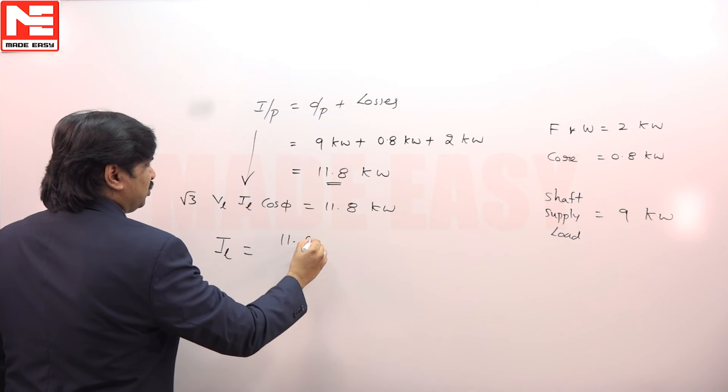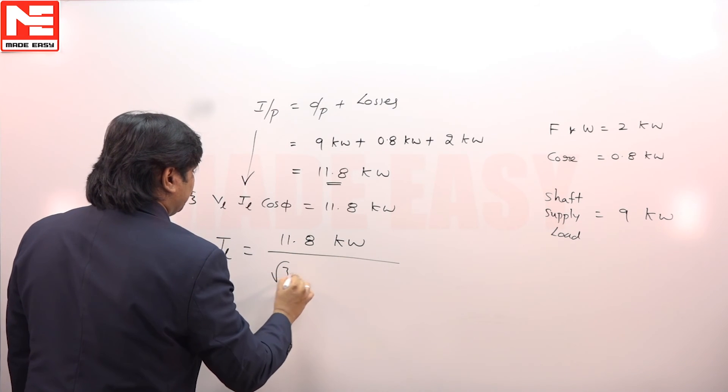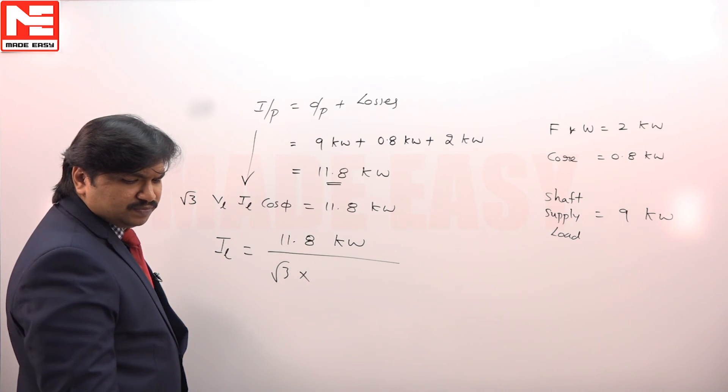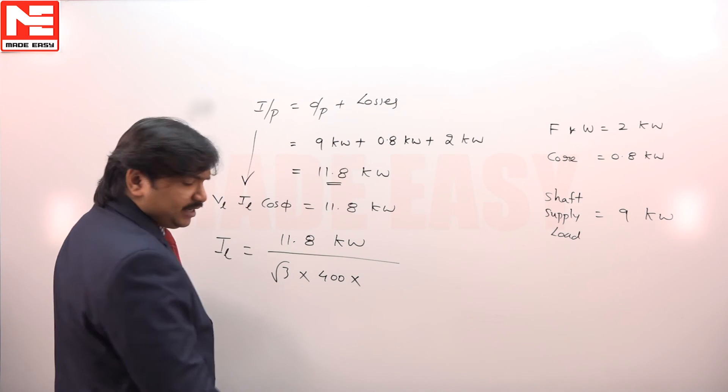IL is equal to 11.8 kilowatt divided by root 3 times the voltage rating 400 volts times the operating power factor 0.8.